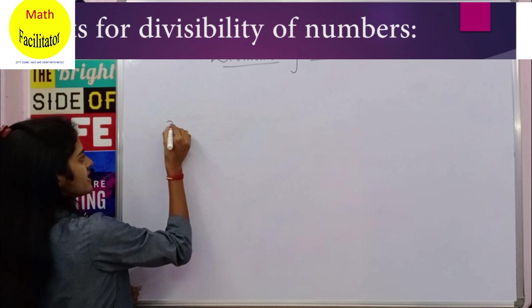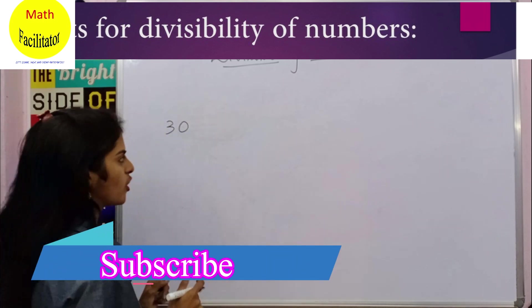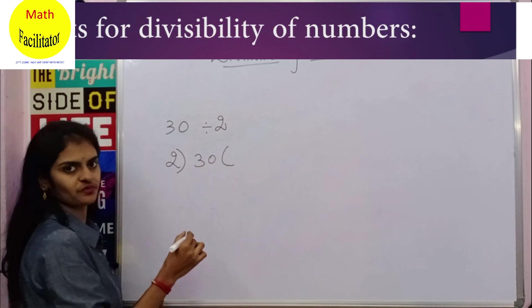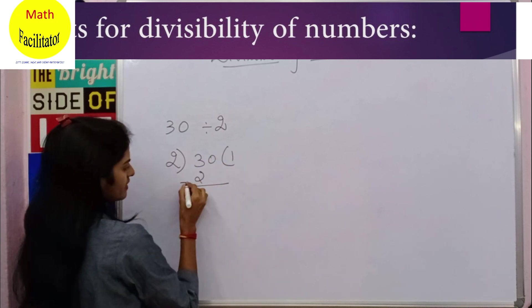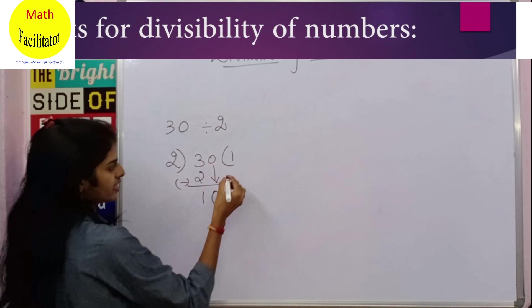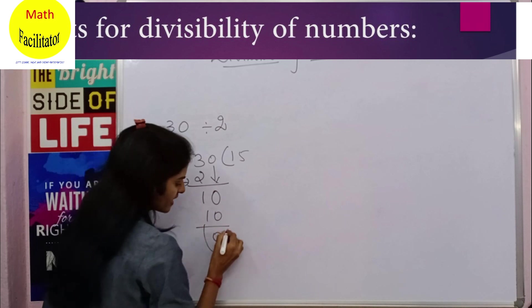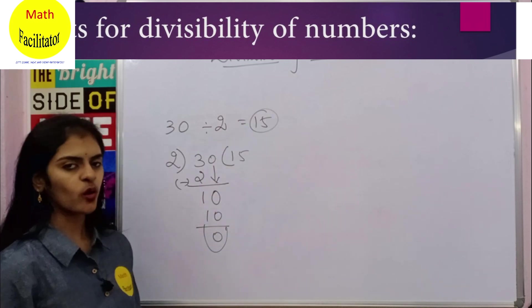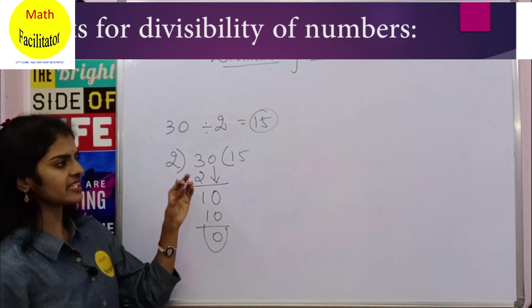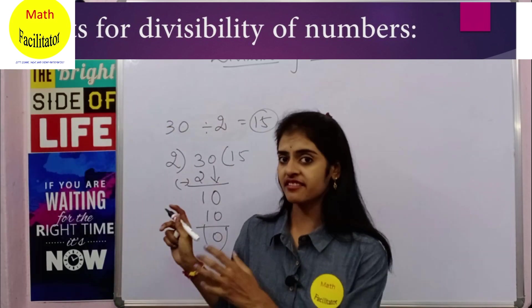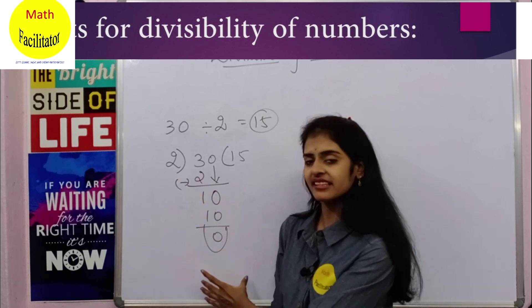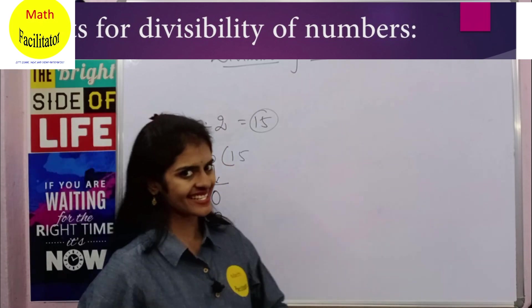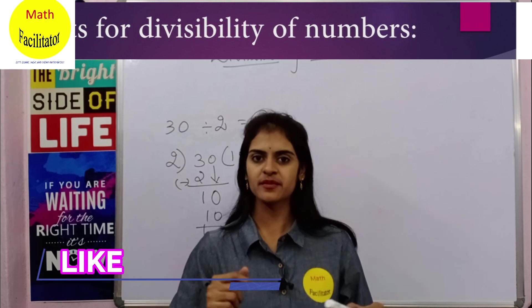If there is a number 30 and I want to check whether it can be divided by 2 or not, I actually divide this number by 2. Two ones are 2, you get 10 carried down, two fives are 10, and the remainder is 0. So 30 is divided by 2 and the answer is 15. For every number, if you want to check divisibility, you divide it. But can we observe some patterns and find divisibility rules without actually dividing?